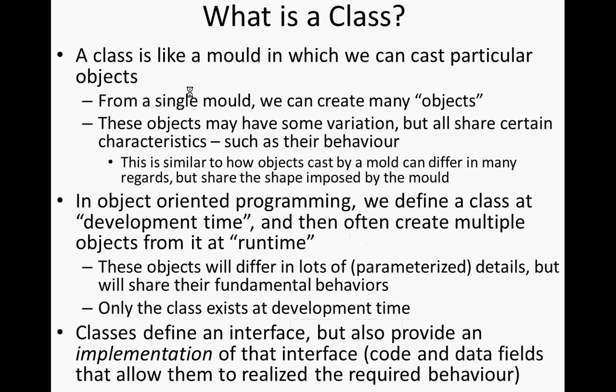I argued today that a class is like a mold out of which we can cast different objects, and so a given class corresponds to many objects at one time. There are many objects that are what we call instances of this class. A given person class becomes many particular people at one time.